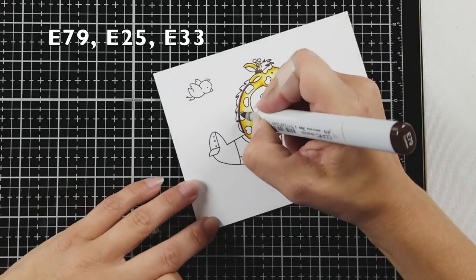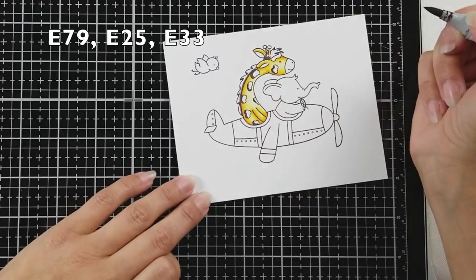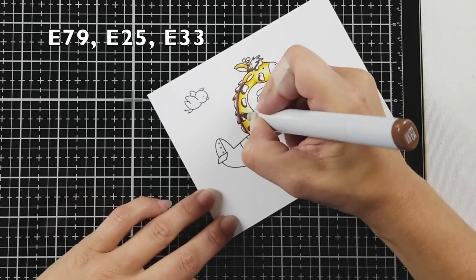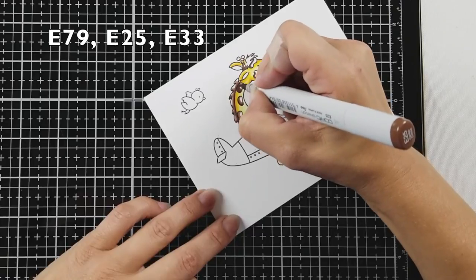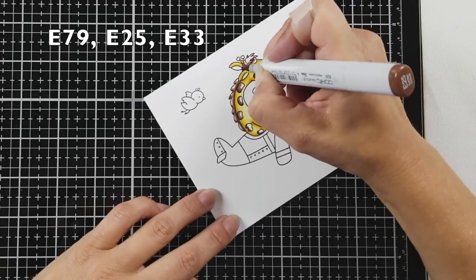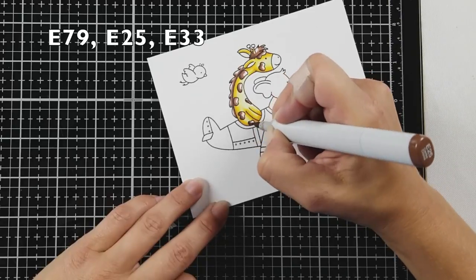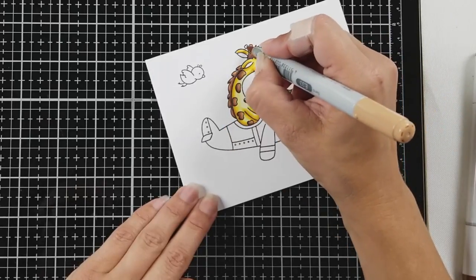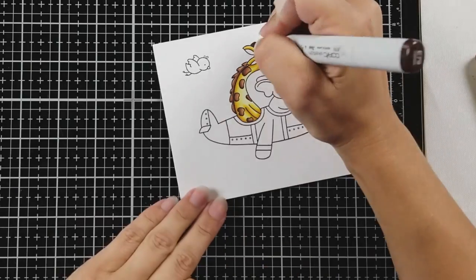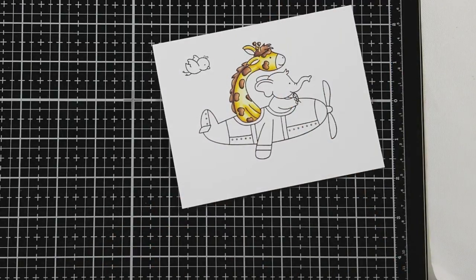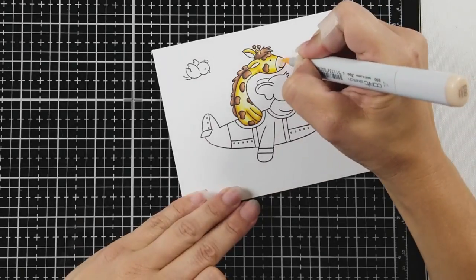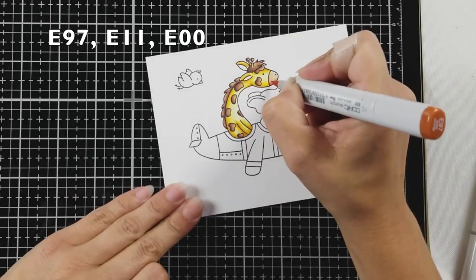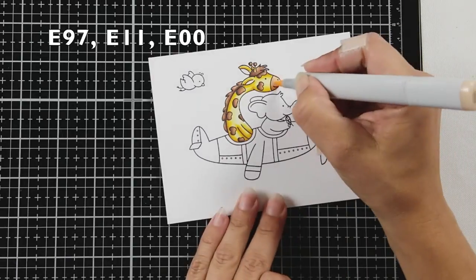So then I'm coming in with my browns and I'm using the E79, E25, and E33. I added the darkest color to the hair, or the mane of the giraffe, to the closest part to the neck and then blended that out. And for the spots, I added my darkest color to the furthest part of the spot away from my light source. I kept the darkest parts towards the left-hand side of the spots. And then for the muzzle, I did E97, E11, and E00 just to give that some quick color.